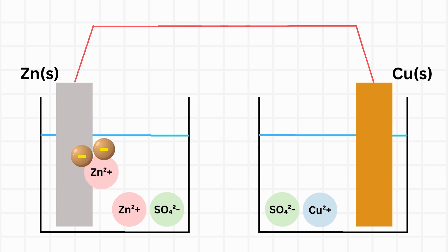Because zinc wants to lose its electrons, the electrons leave zinc and reaches the copper ion, making it neutral.